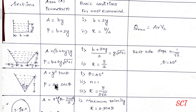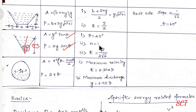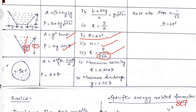Next, triangular section. Using the formula with depth and included angle theta: area equal to y squared tan theta. Perimeter equal to 2y sec theta. Most economical condition: theta equal to 45 degrees, n equal to 1. Hydraulic mean depth R equal to y divided by 2 square root of 2.